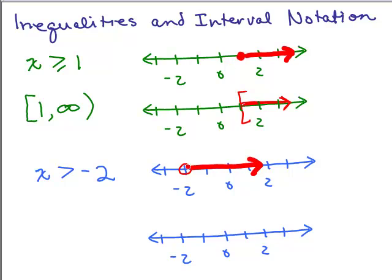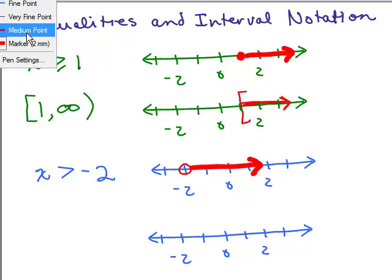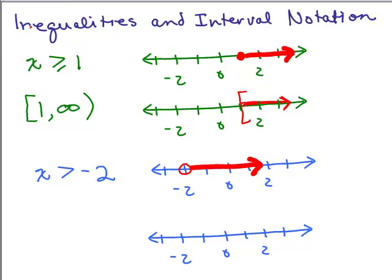The difference is: instead of a dot, we put a circle. A circle means negative 2 is not part of the solution. For interval notation, there is no smallest number, so we use a parenthesis — meaning it goes almost to negative 2 but doesn't touch it. Then going to the right, I'm going all the way forever, so I use infinity with a parenthesis.